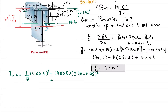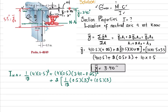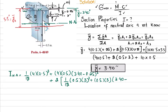For element 2, there are two of them, so we multiply by 2: I2 = 2 × [(1/12)·0.5·(3)³ + A2·d2²]. The area A2 = 0.5 × 3, and d2 is the distance from the neutral axis to the mid of element 2: d2 = ȳ − y2' = 3.40 − 2.00, squared.